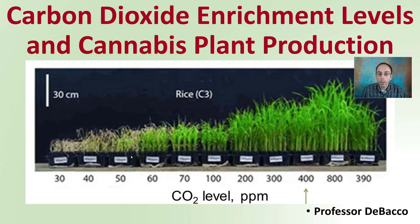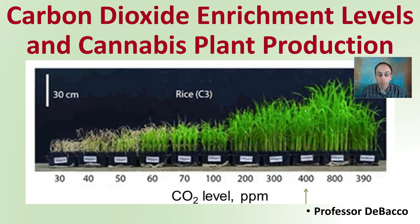Looking at a picture here of the rice, we can see that 390 to 400 ppm is considered to be atmospheric or normal carbon dioxide levels, and we can see how there is a difference in rice production. Definitely as we go below that, we see it dwindling off, and above that we are seeing an increase in yield, or at least in biomass. So how does this apply to cannabis?